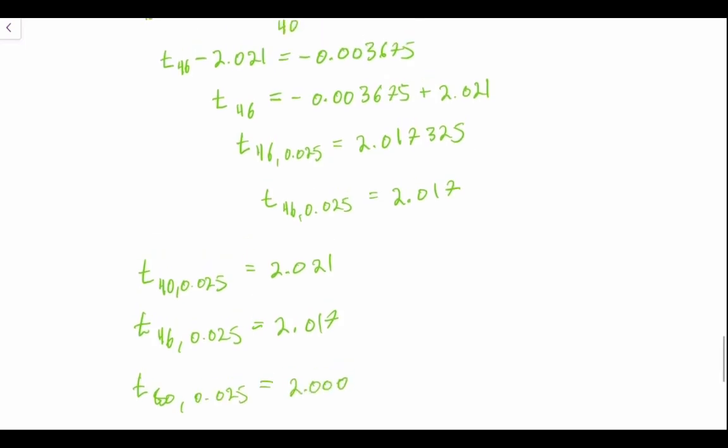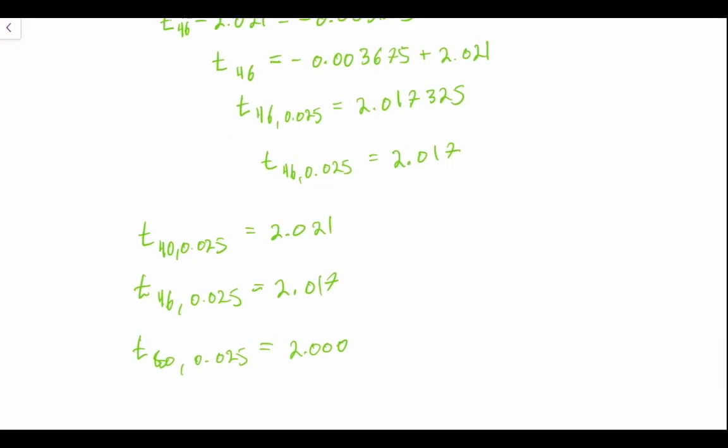As we can see, this is exactly as we expected. So the t-critical value at t at 40 degrees of freedom is greater than t at 46, which is greater than t at 60. This is a way that you can use to estimate or to find your t-critical with a specified number of degrees of freedom if it's not on your t-table.